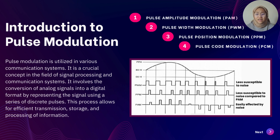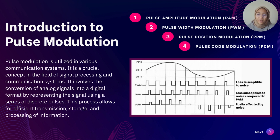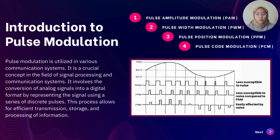So what is pulse modulation? Pulse modulation is utilized in various communication systems — your phone, my phone, laptops, or social devices that we're using these days. It involves the conversion from analog signals into a digital format by representing the signal using a series of discrete pulses, as you can see on the screen. This process allows for efficient transmission, storage, and processing of information.